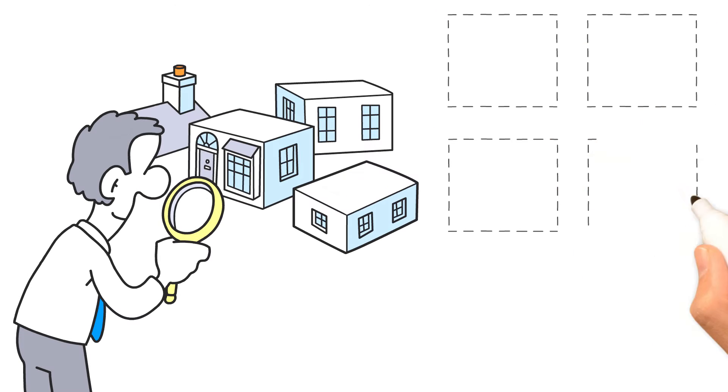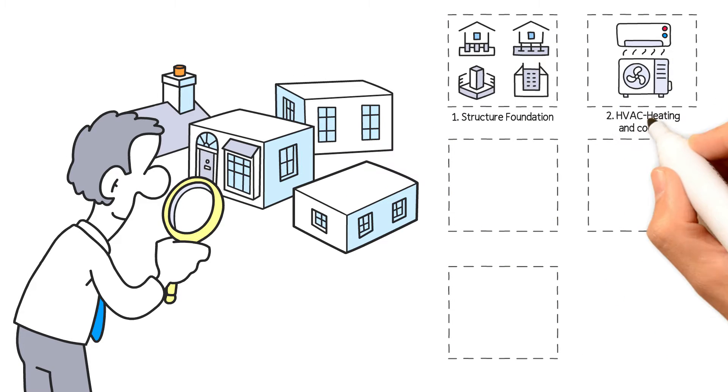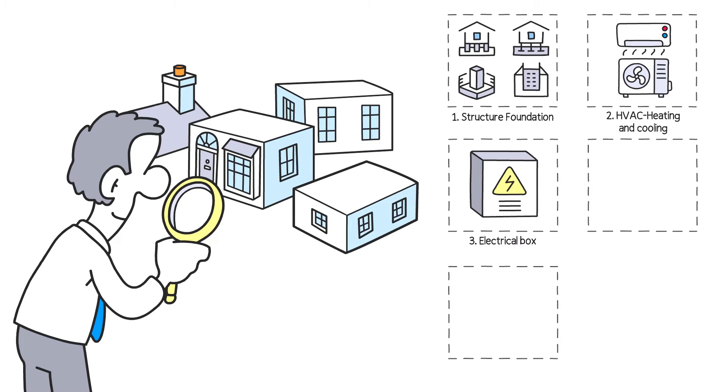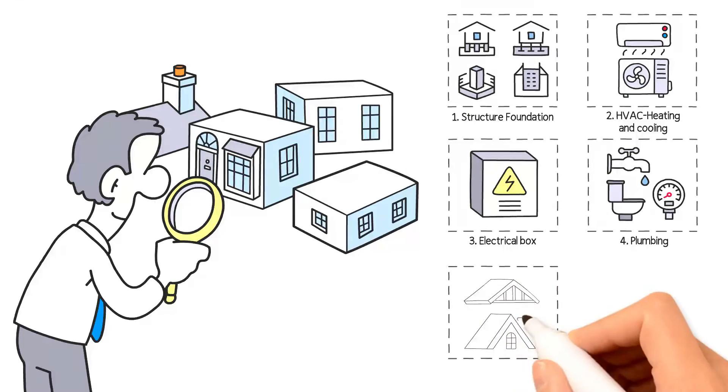We'll check structure foundation including the attic, HVAC heating and cooling, electrical box and limited interior electrical, plumbing check for proper drainage and running water at kitchens and baths and your water heater, and last we'll check your roof for any issues.